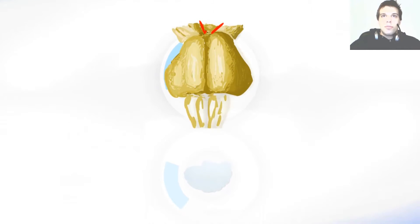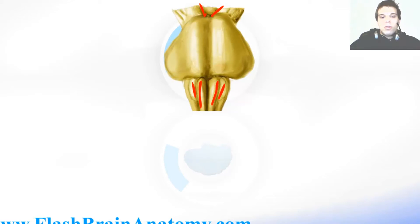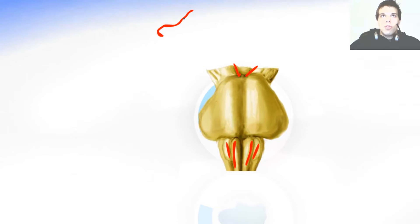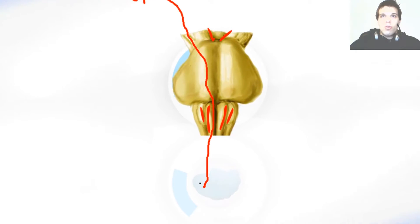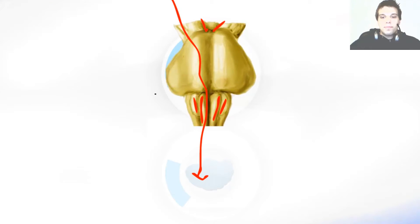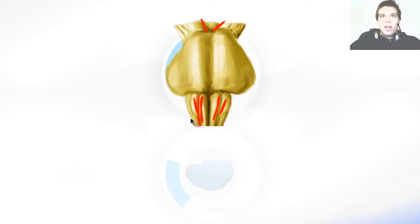Right below that, there are the pyramids of the medulla oblongata and the olivary body. The olivary body are the nuclei, and the pyramids are the elevations caused by the corticospinal tract. The corticospinal tract comes from the cortex of the brain and then goes to the spinal cord — that's why it's called the corticospinal tract. The pyramid is found between two sulci: the anterior median sulcus, and the anterolateral sulcus, which is between the olivary body and the pyramid.